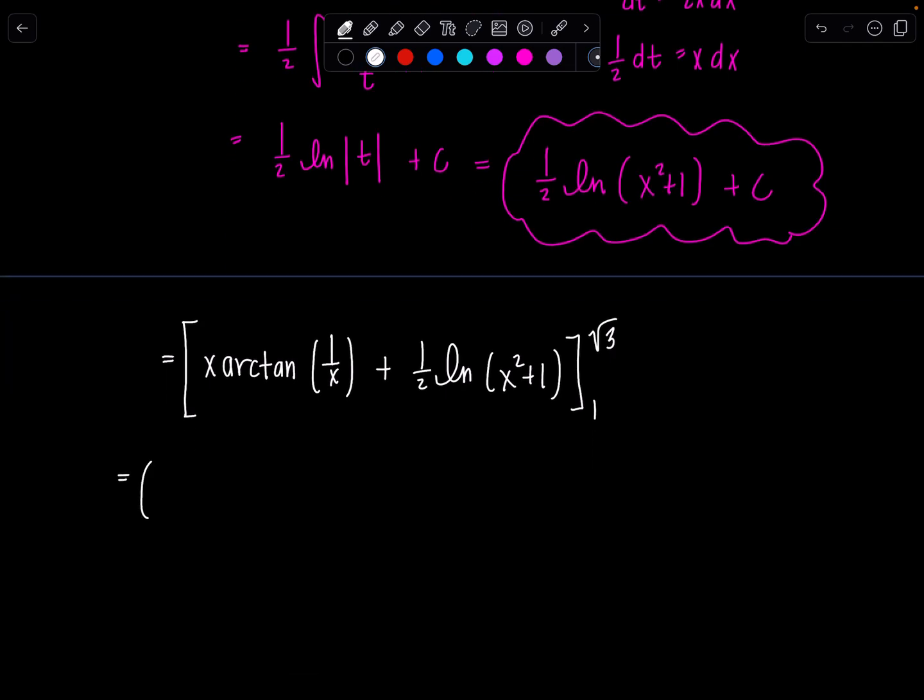Very good. So here we go. Upper limit is rad 3. So rad 3 times arc tan of 1 over rad 3 is going to be pi over 6 plus 1 half ln rad 3 squared is 3 plus 1. This is 4, so that's the upper limit, minus lower limit, 1 times arc tan of 1, that's pi over 4, plus 1 half ln, 1 squared plus 1, that's 2.